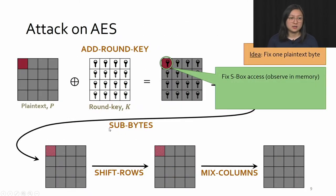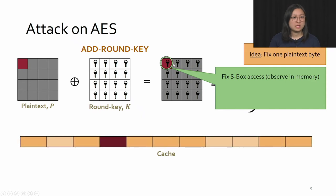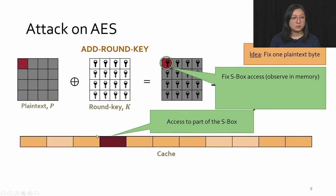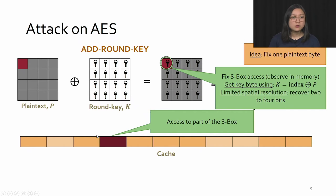Looking at the cache attack on AES in more detail: in the first round attack, we fix the SBox access for a byte and observe it in memory. When we perform different encryptions with Prime and Probe, we see one cache line consistently accessed, representing the SBox access — that's one part of the SBox. We now have some information on the index and the plaintext, so we can recover only some information about the key, in this case two to four bits.